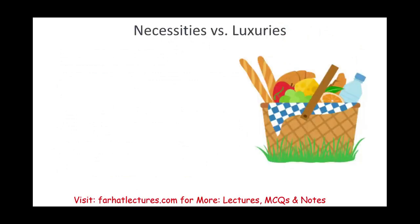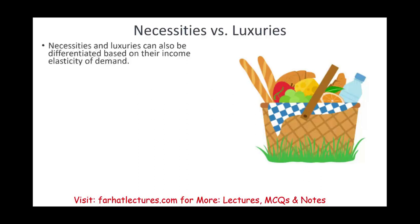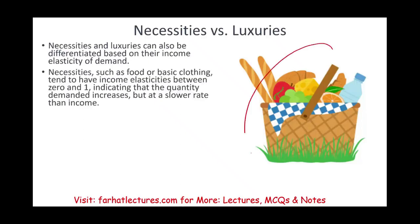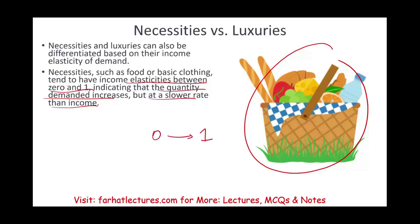We also have to look at goods from the perspective of necessities versus luxuries. Necessities — like food or basic clothing — tend to have income elasticity between 0 and 1, indicating that quantity demanded increases but at a slower rate than income. If the coefficient is between 0 and 1, it is positive but not growing at a fast rate. If income elasticity is greater than 1, it's growing at a faster rate.